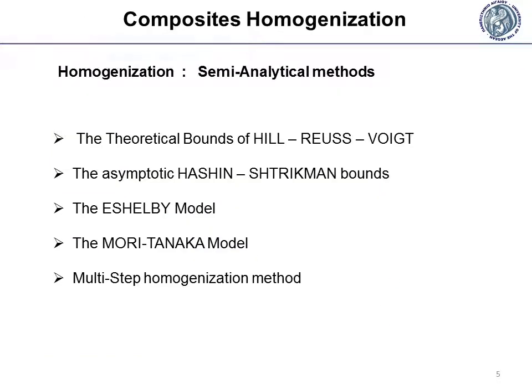One way to calculate and predict the effective properties of heterogeneous material is using analytical methods. The most important analytical methods are the theoretical bounds of Hill-Reus Voigt, the asymptotic Hashin-Shtrikman bounds, the SLB model, the Mori-Tanaka model, and the multi-step homogenization method.